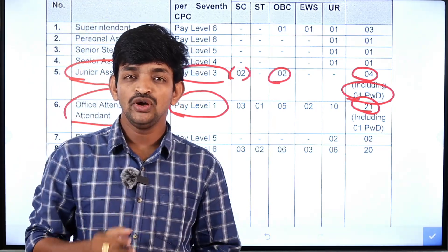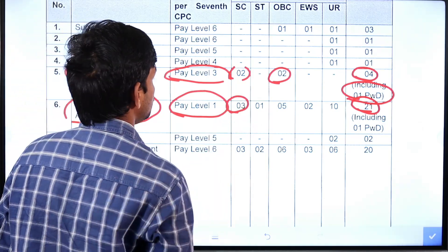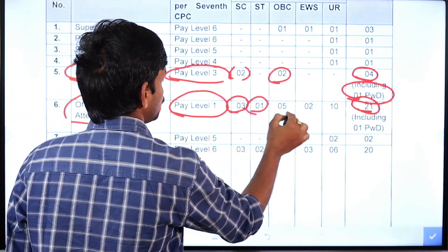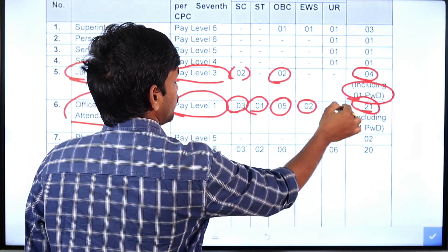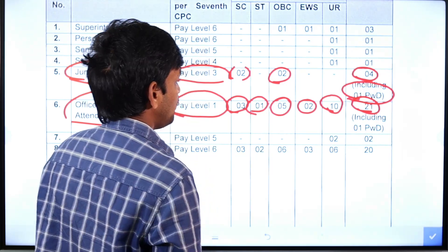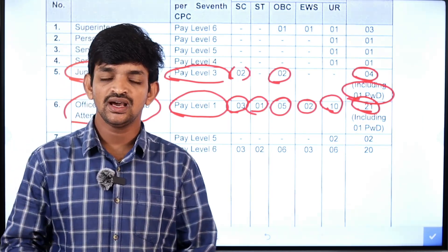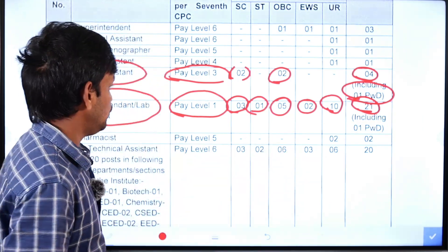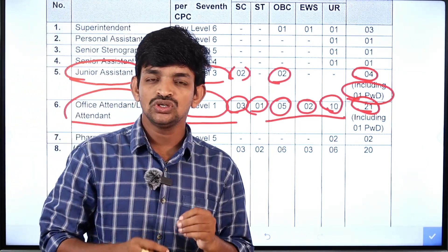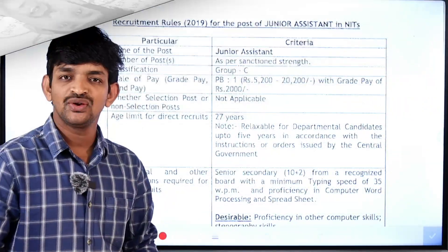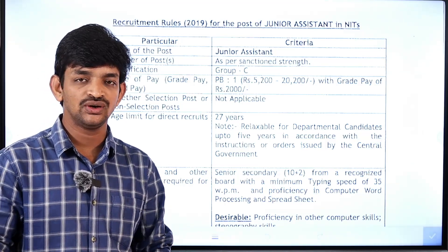These vacancies are divided on a community basis. There are 3 posts in the unreserved category. Now, we have the basic details of both posts — Junior Assistant and Office Attendant or Lab Attendant — and we will check further details like education qualifications and age limits.